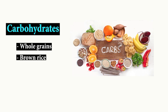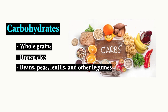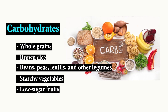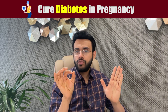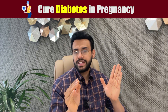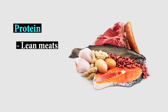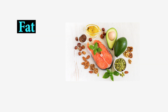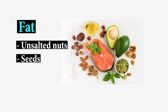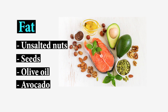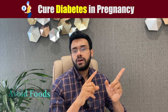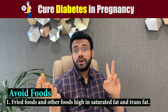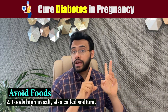Good carbohydrate choices include whole grains, brown rice, beans, peas, lentils and other legumes, starchy vegetables, and low-sugar fruits. For protein, pregnant women should have two to three servings per day — good sources include lean meat, poultry, and fish. For healthy fats, choose unsalted nuts, seeds, olive oil, and avocado. You should avoid fried foods, foods high in saturated and trans fat, especially fried potatoes, and all salted foods.